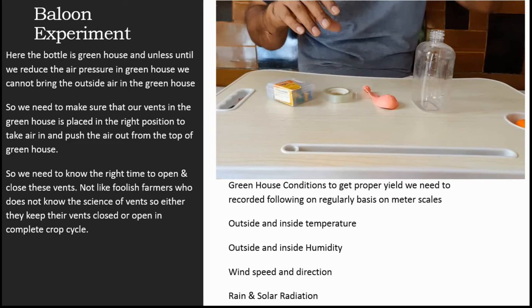Unless and until we reduce the air pressure in the greenhouse, we cannot bring the outside air in. We need to make sure that our vents in the greenhouse are placed in the right position to take air in and push the air out from the top of the greenhouse.